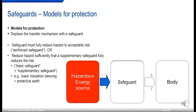The model for protection is that safeguards are interposed between the hazard and the person or property at risk. 62368 talks about reinforced safeguards that fully reduce the risk to acceptable levels, and also basic and supplementary safeguards that act together so that if one fails, the other still protects. The hazardous energy source has a safeguard interposed between it and the person at risk. A good example is basic insulation plus protective earthing, which should be familiar from the legacy standards.